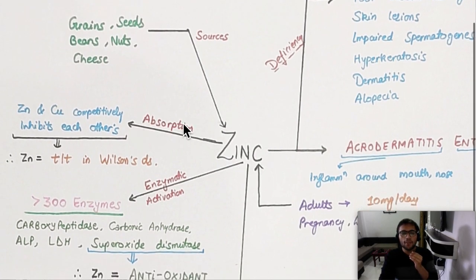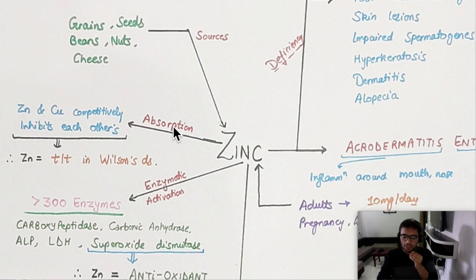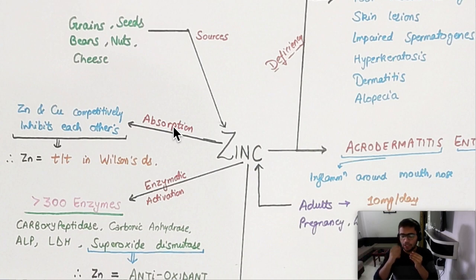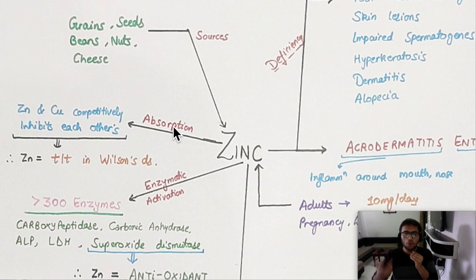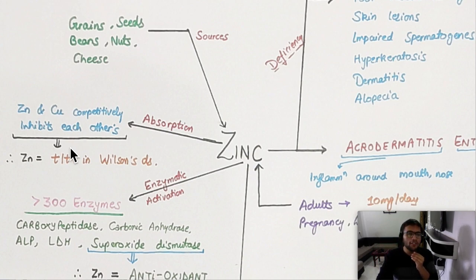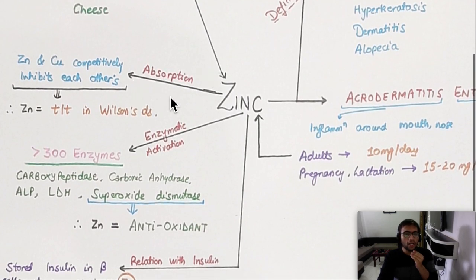For zinc absorption, the key point is that copper and zinc are competitive — they compete for the same absorption site. If zinc is in higher quantity, copper absorption will reduce. This has a therapeutic role in Wilson's disease, where copper was increasing. So you need to give zinc for the treatment of Wilson's disease.